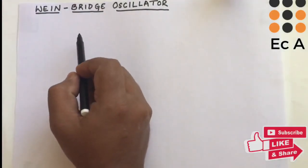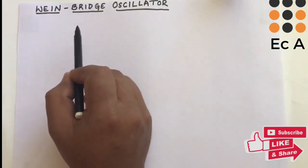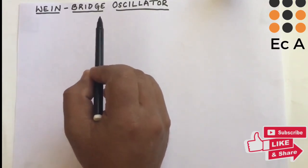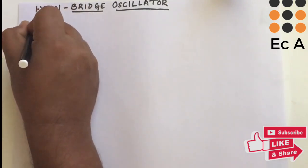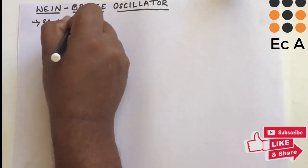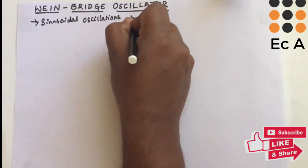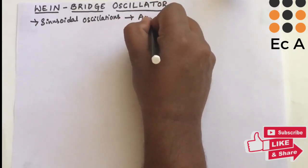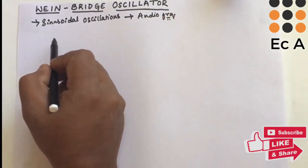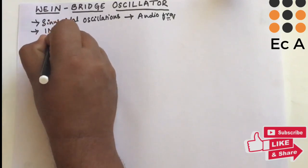Hello friends, welcome to EC Academy. In this lecture we will understand the Wien Bridge Oscillator. The Wien Bridge Oscillator generates sinusoidal oscillations at the output. This oscillator operates in the range of audio frequencies, and it is very stable in producing the output frequency. It can produce frequencies in the range of 1 MHz.